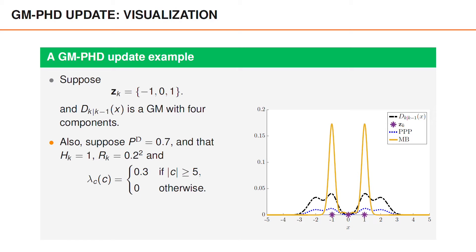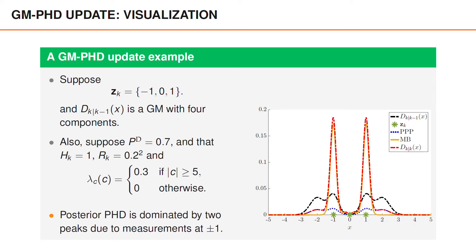Due to the three measurements, we obtain a multi-Bernoulli with three Bernoulli components, where two of them have spatial pdfs around minus 1 and 1, whereas the third Bernoulli has a bimodal spatial pdf close to 0. We have illustrated the phd of that multi-Bernoulli process using an orange curve in the figure. We obtain the posterior phd by adding the contributions from the undetected and detected objects,